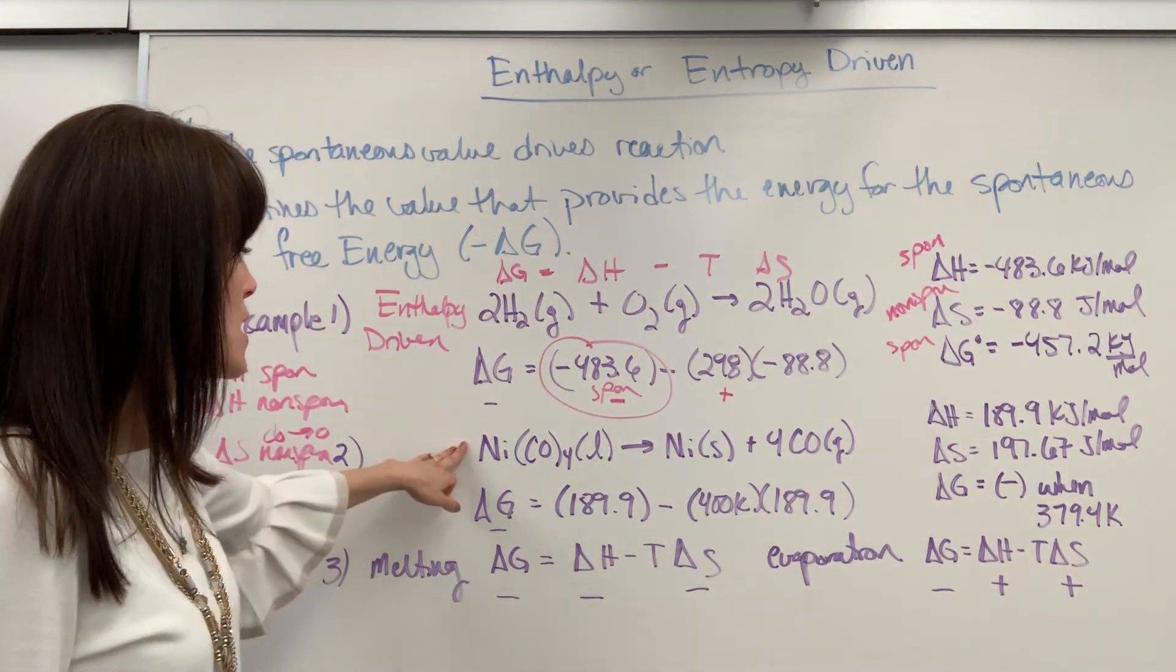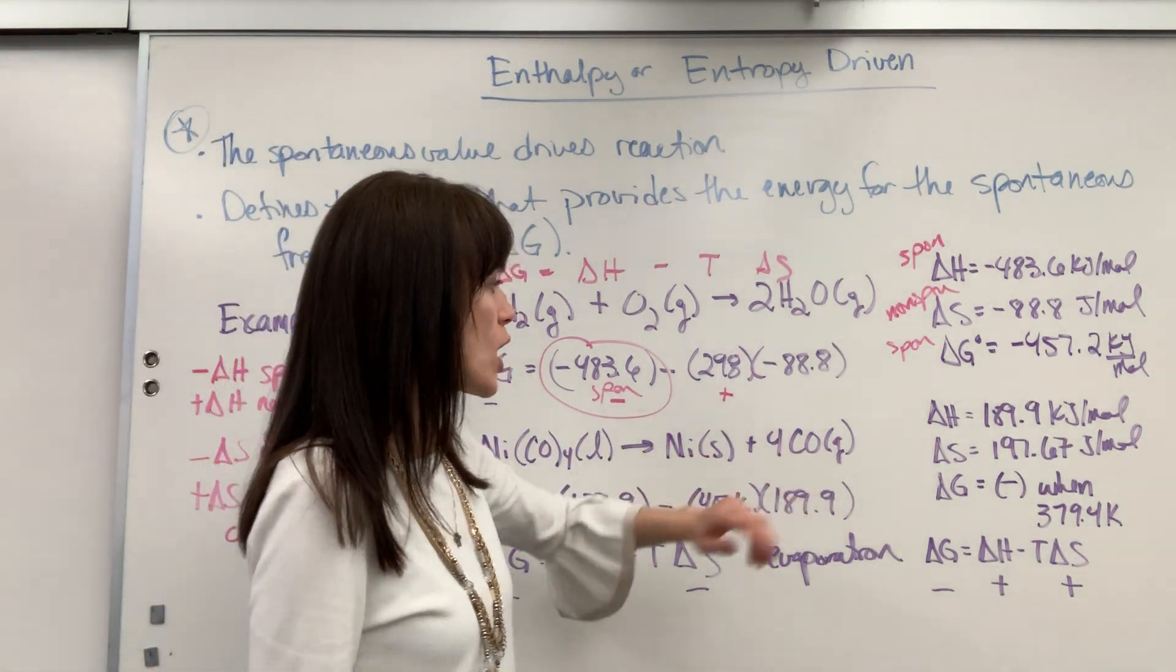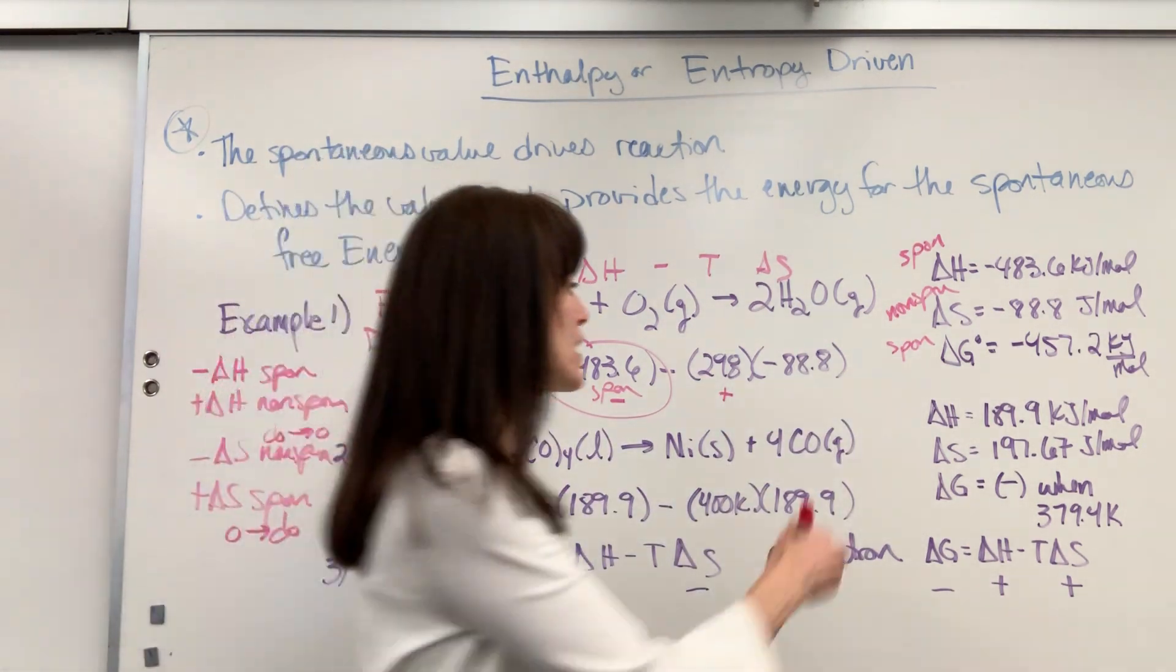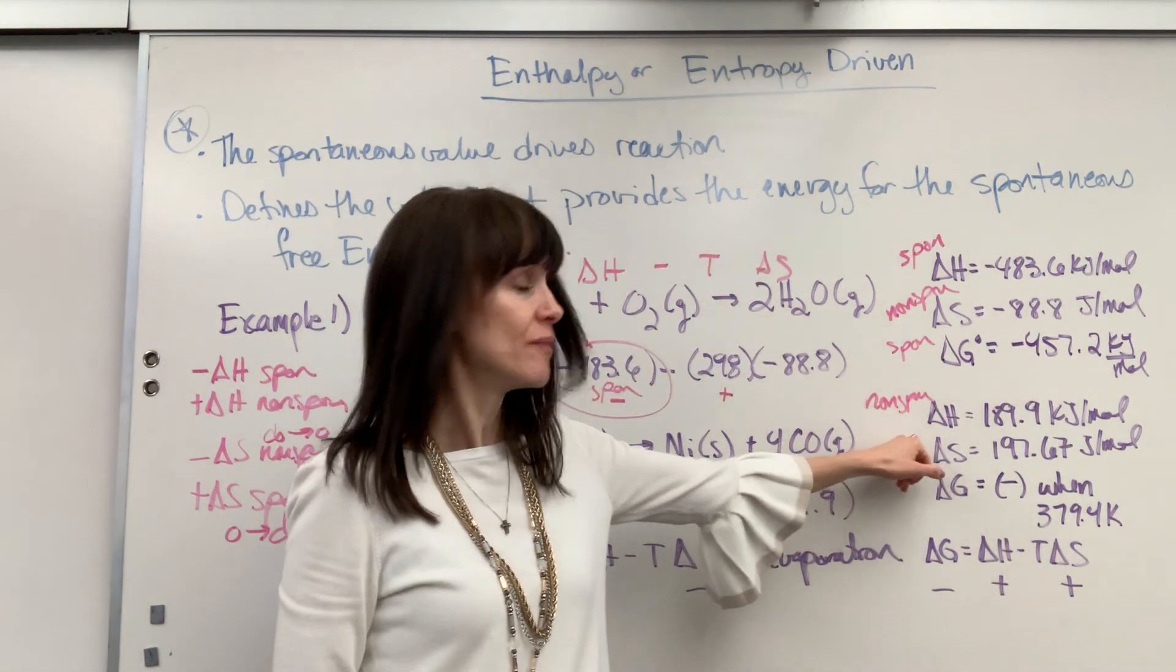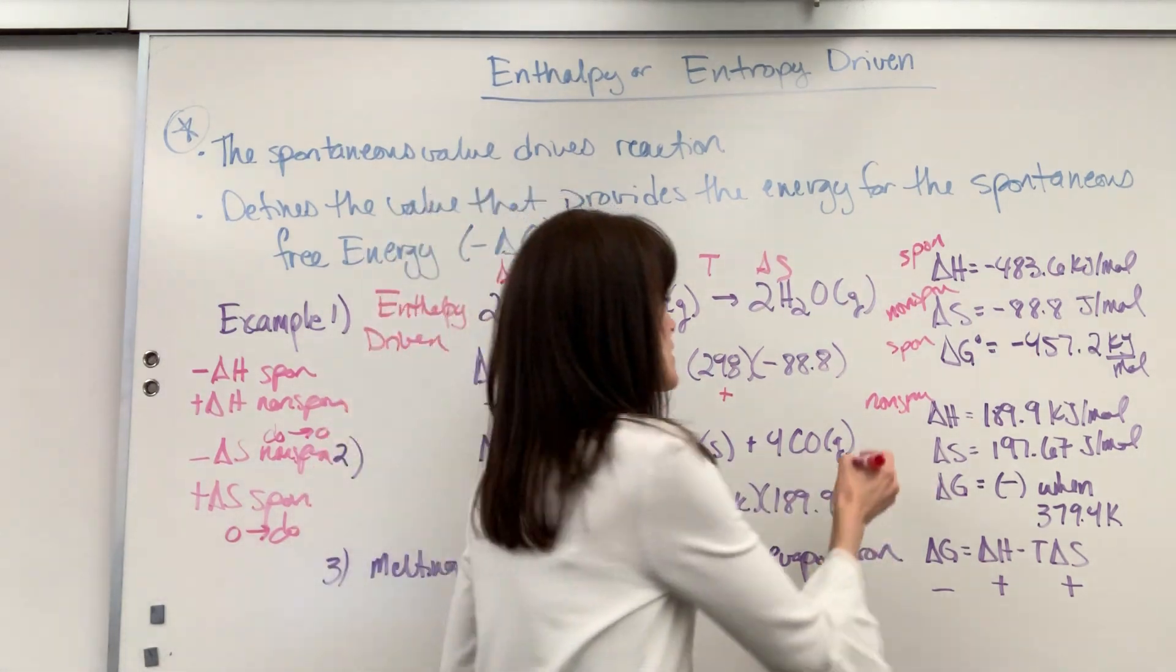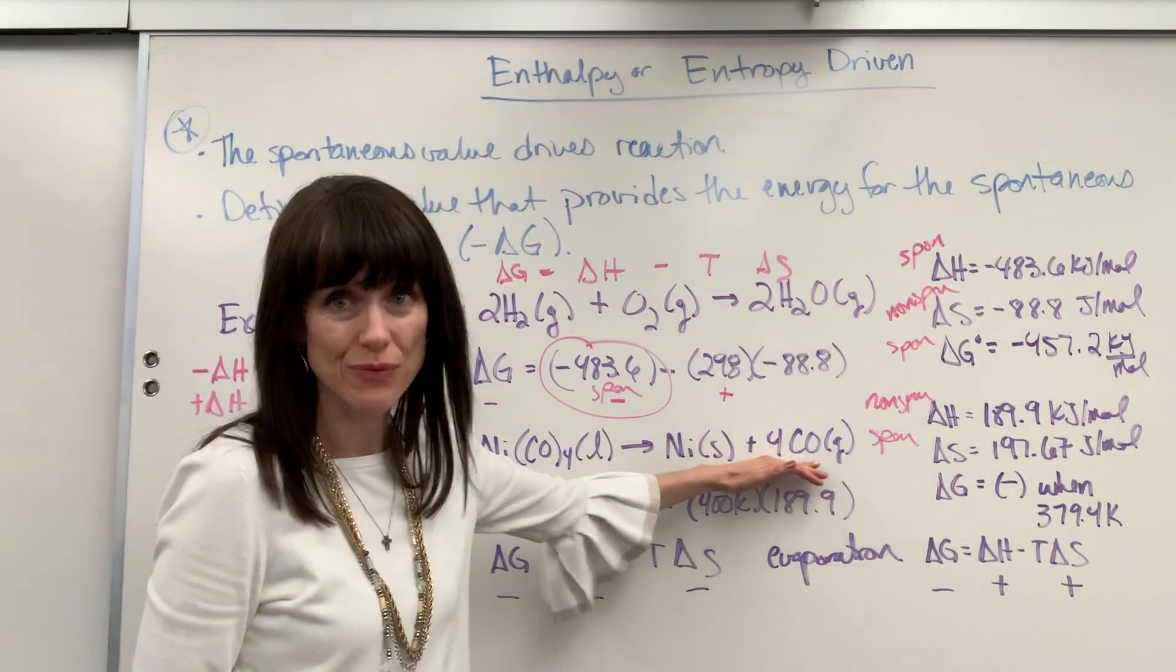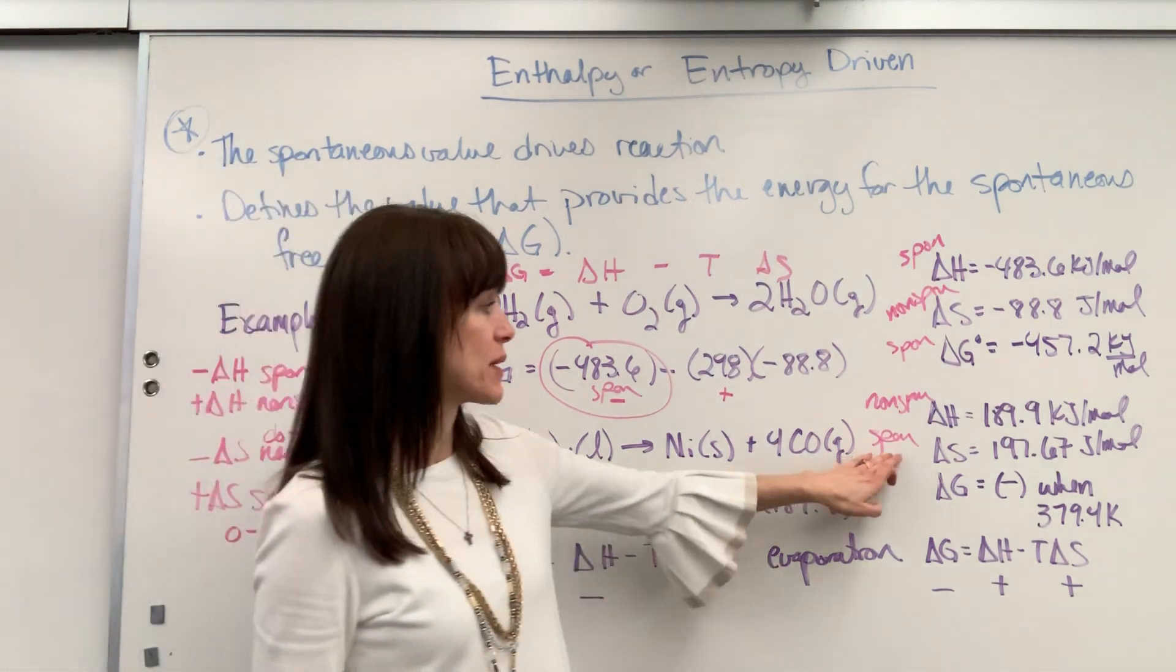Example number two here. So we're going to have this nickel compound liquid go to a nickel solid and a carbon monoxide. Here are my values. So delta H positive 189.9. So that's going to be endothermic non-spontaneous because it's positive. Delta S positive 197. So this is spontaneous because it's going from order to disorder. I'm going from one mole to five moles. So becoming much more disorganized. So that's spontaneous.